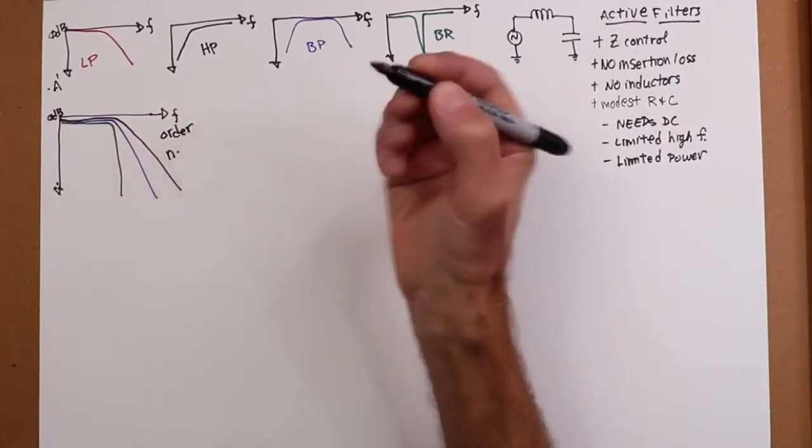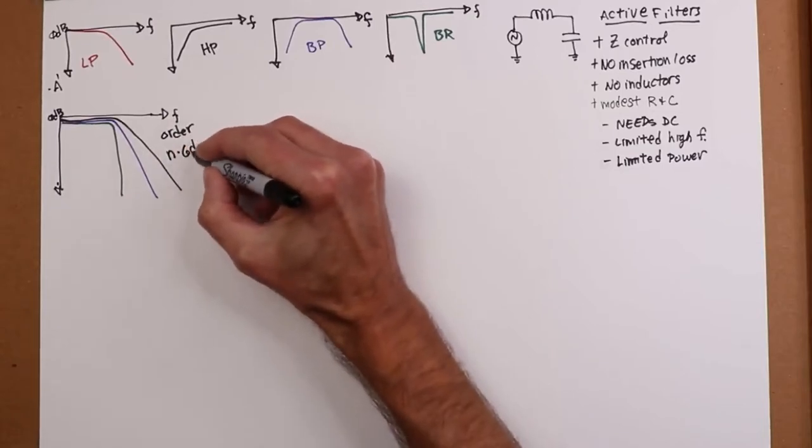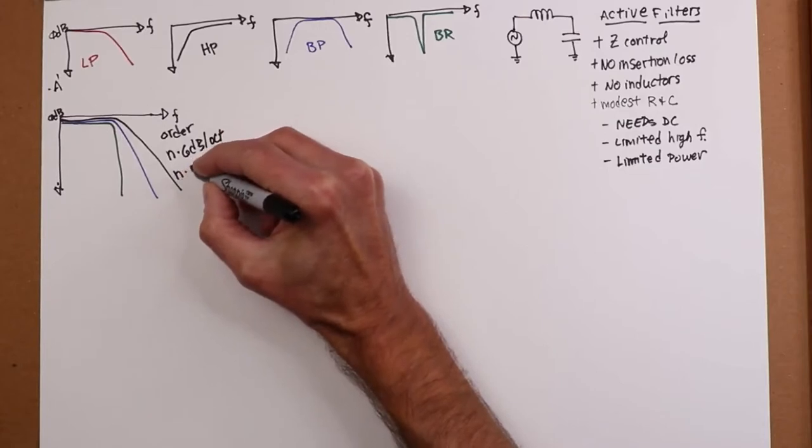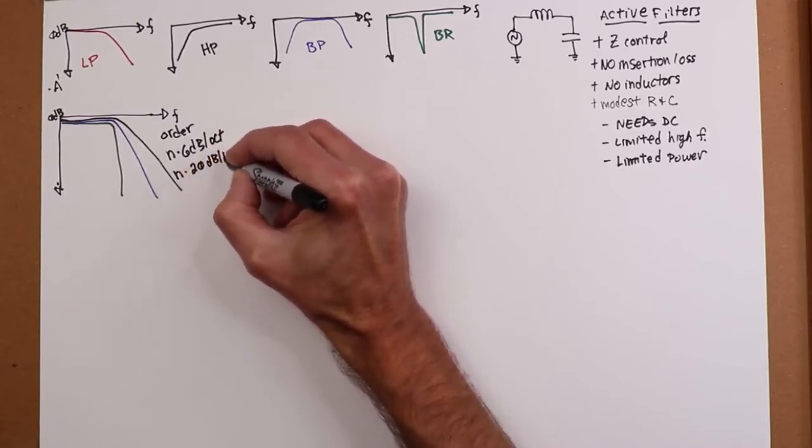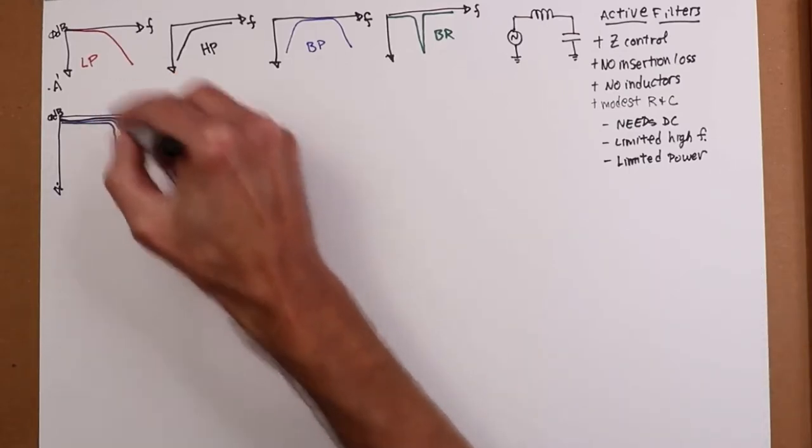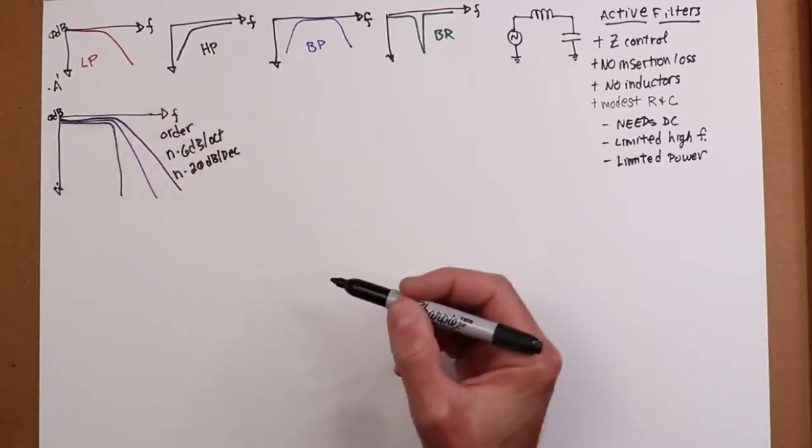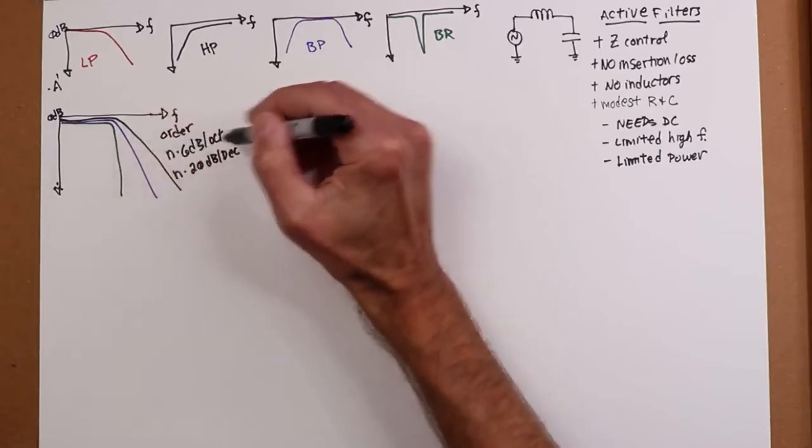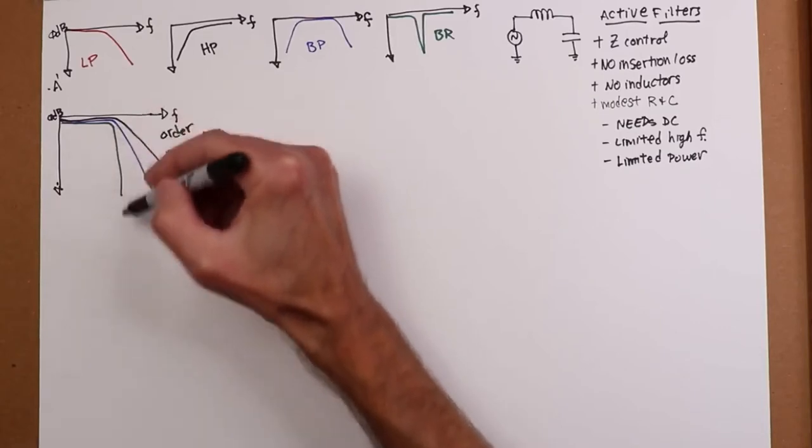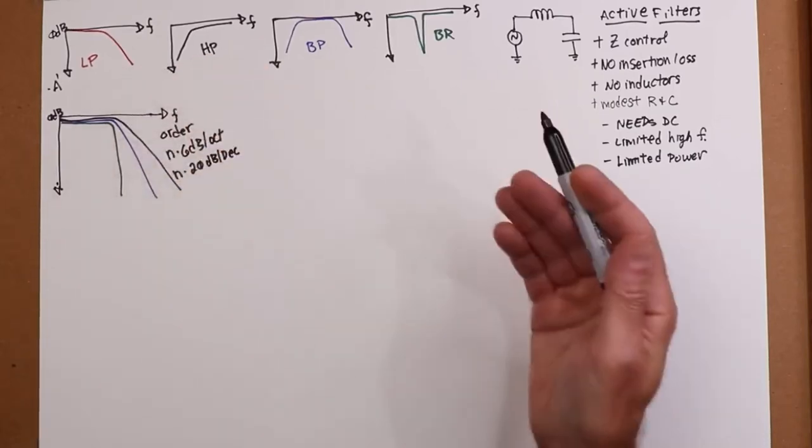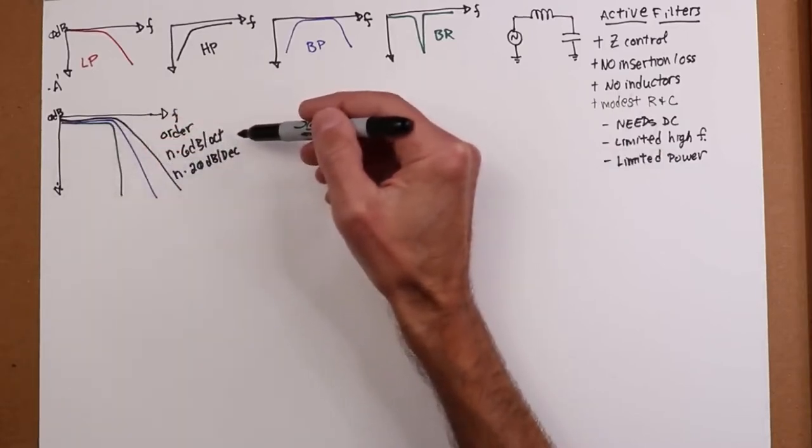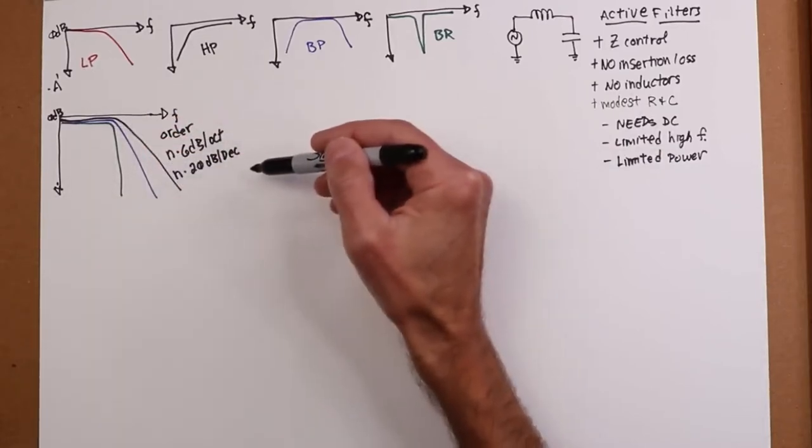It also tells you what the ultimate roll-off slope here is, which would be n, the order, times six db per octave or n times 20 db per decade. So if it's a second order filter, let's say the black here is second order, that means it's going to roll off at 12 db per octave or 40 db per decade.